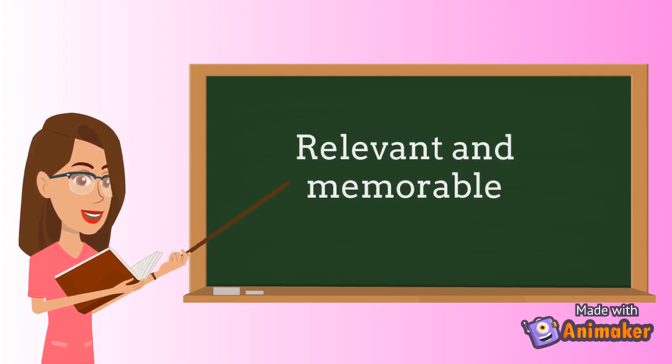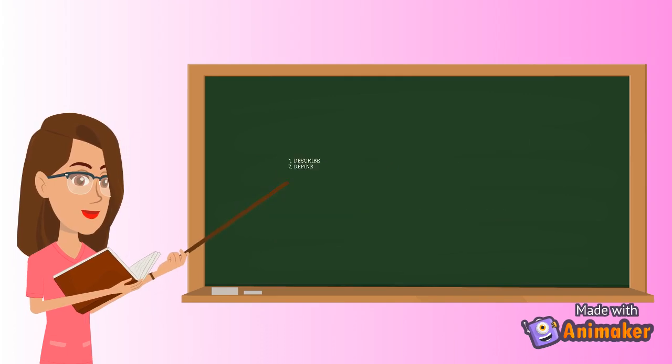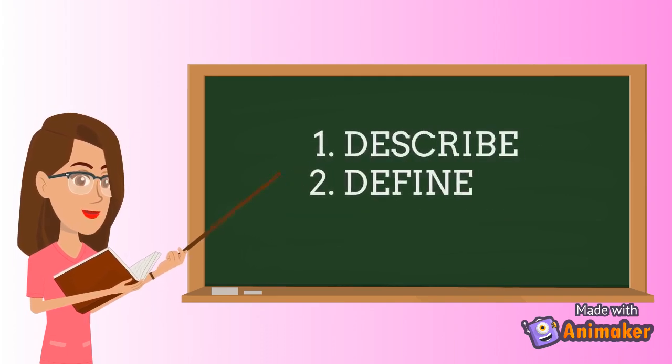The third one is relevant and memorable. It must be helpful to your audience and could easily be remembered. Now these are some methods and techniques on how we could share information.